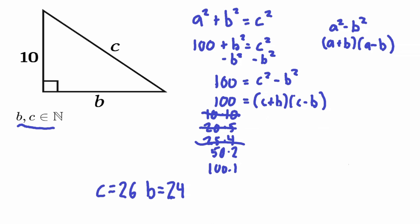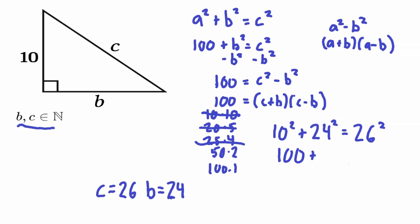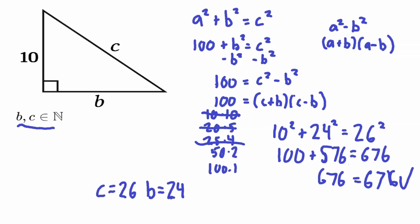To verify, let's plug back into the Pythagorean theorem: a² + b² = c². So 10² + 24² = 26²? That gives us 100 + 576 = 676. And indeed 24² = 576 and 26² = 676, and 100 + 576 = 676. This confirms that b = 24 and c = 26 is correct.